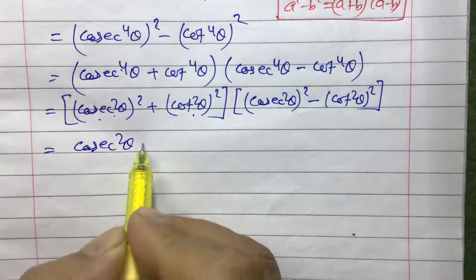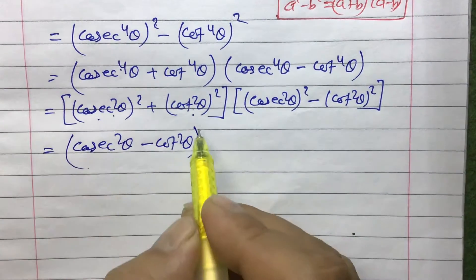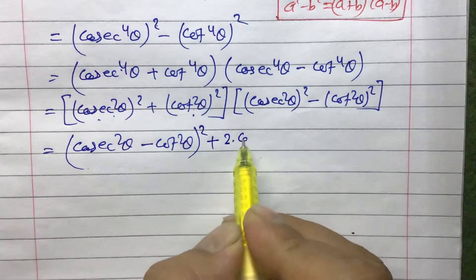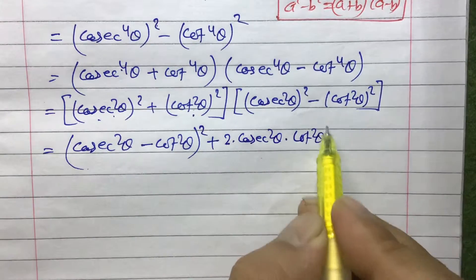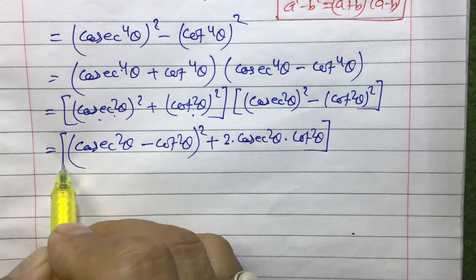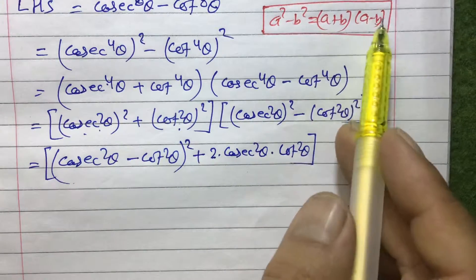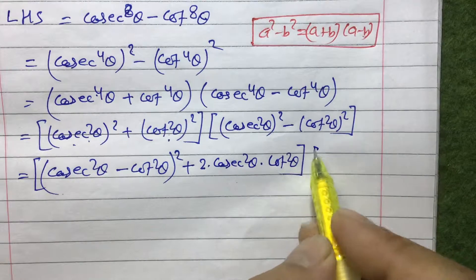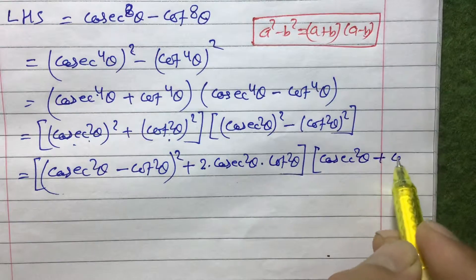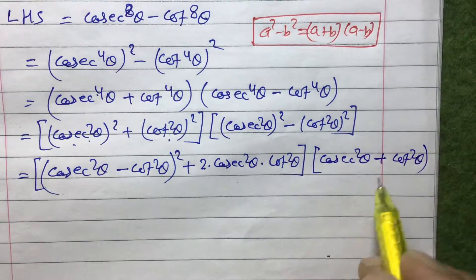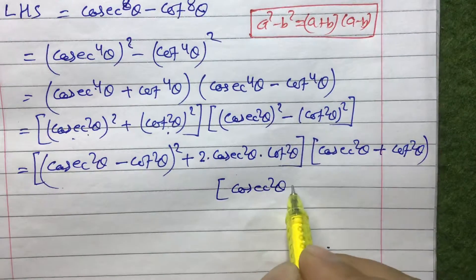Applying the second formula to the first factor: (cosec²θ - cot²θ)² + 2·cosec²θ·cot²θ. For the second factor, we apply a² - b² = (a + b)(a - b): (cosec²θ + cot²θ)(cosec²θ - cot²θ). These are our two factors.